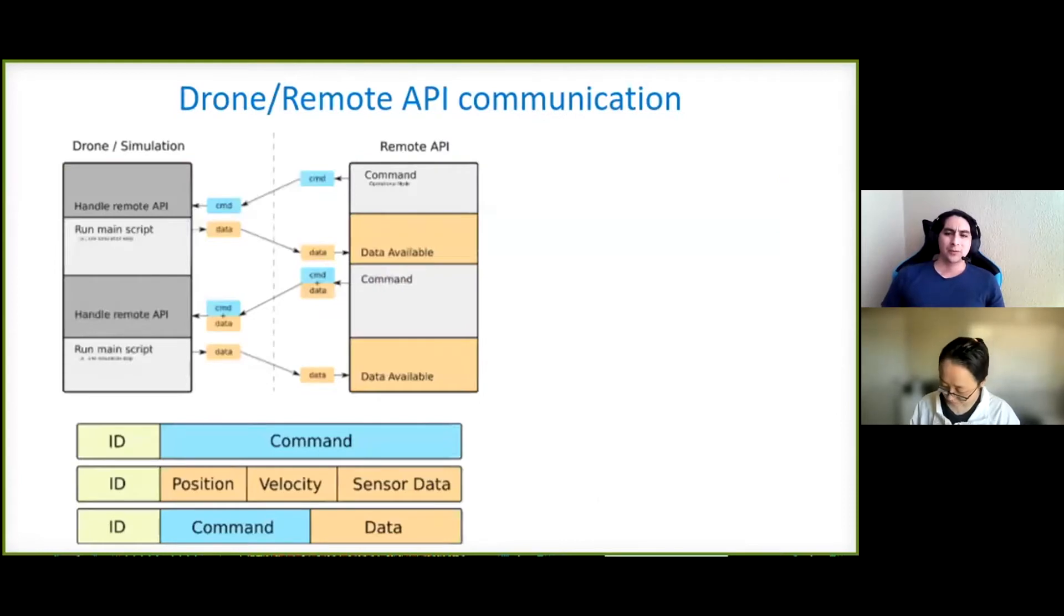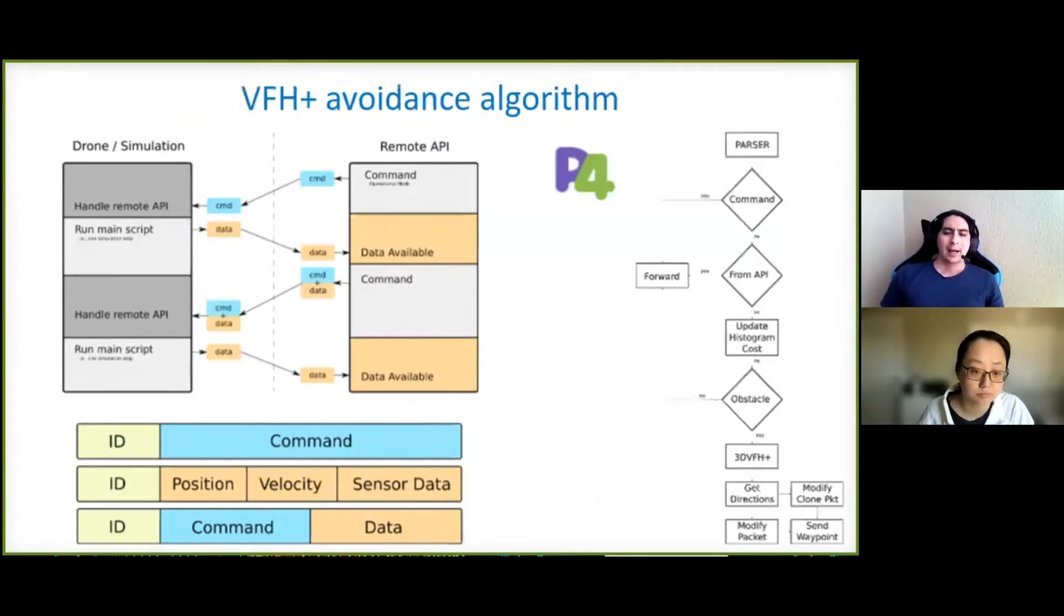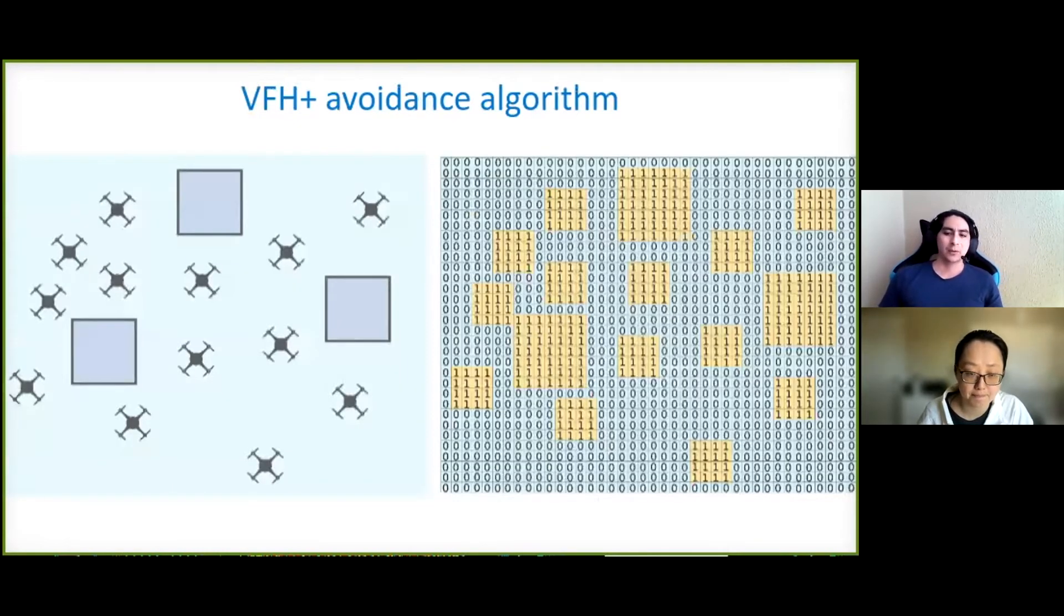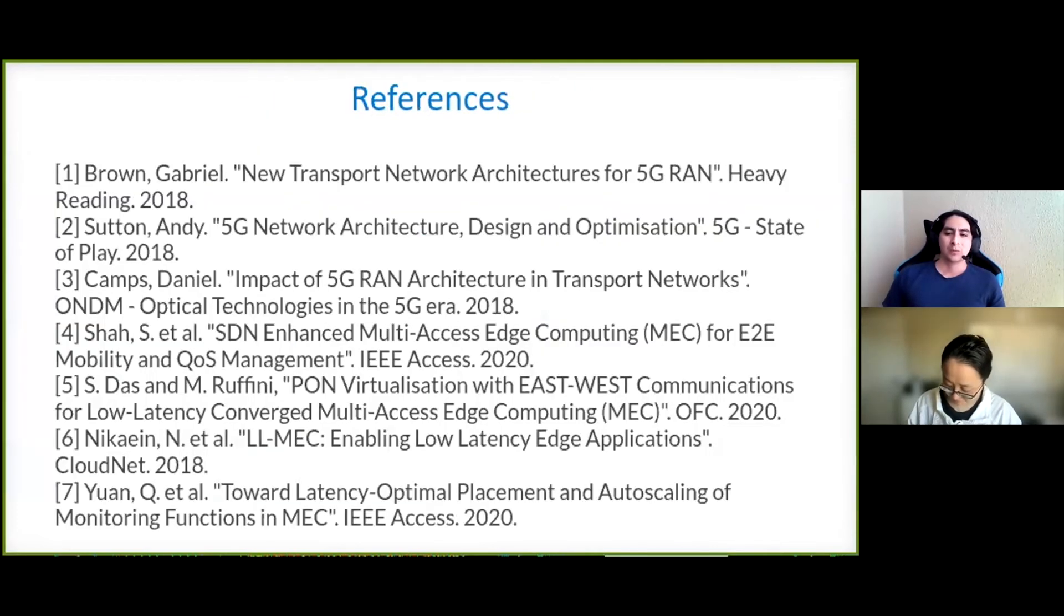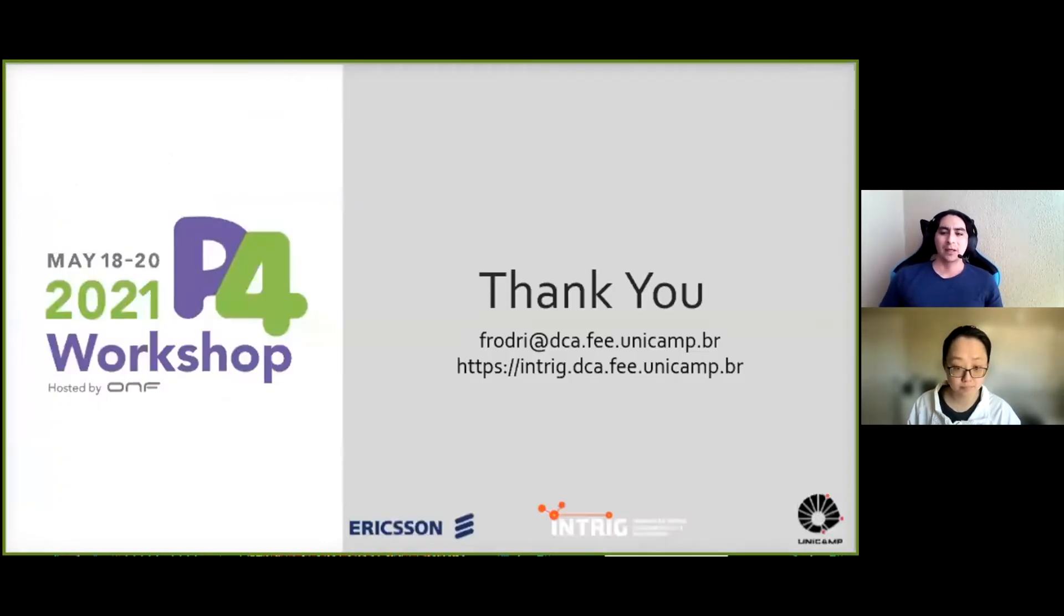Just to finalize, this is an overview of how the communication between the quadcopter and the remote API works, and how we can implement a collision avoidance, for instance, using a vector field histogram approach, that basically what it's going to do is going to save all the information of the environment in a histogram that can be used to detect and prevent collisions. So it's basically that. Thank you. And if there is an adult who would like to discuss more, please feel free to contact me.